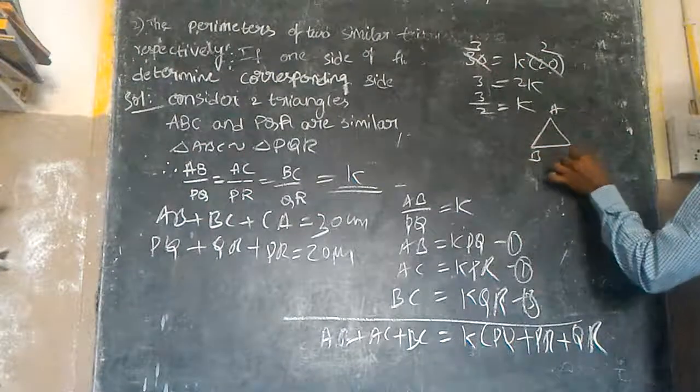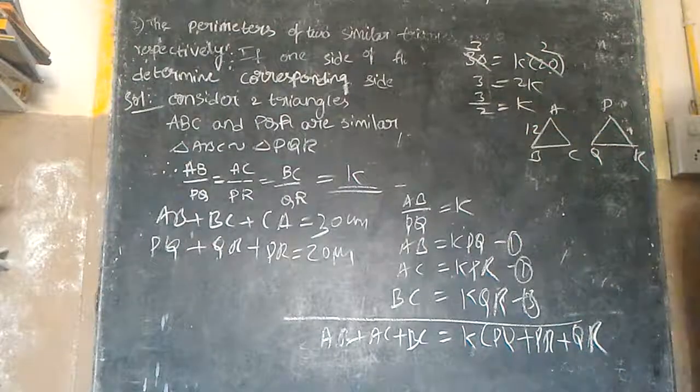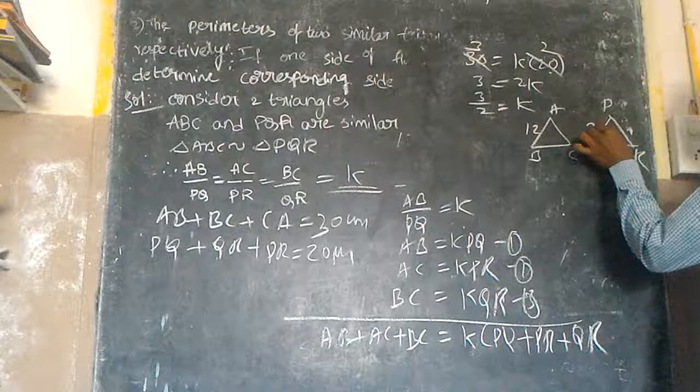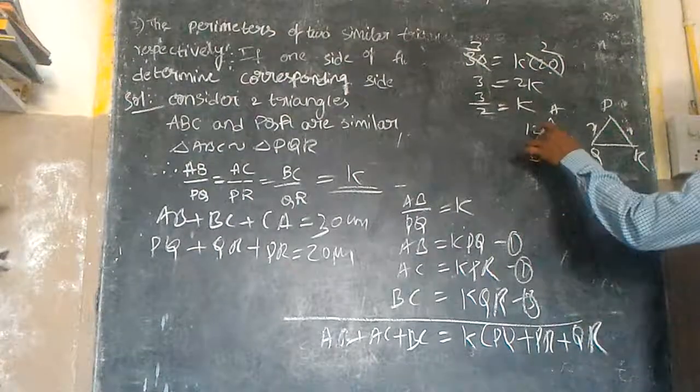Now we can draw the diagram. Triangle ABC and PQR. This side is 12 cm, this side is X. AB by PQ is equal to K.